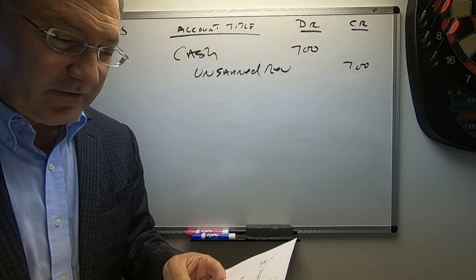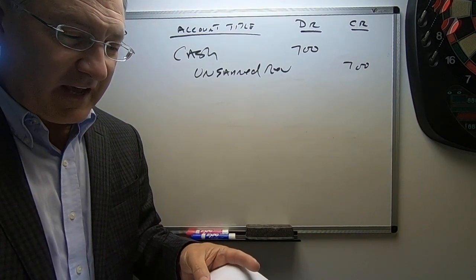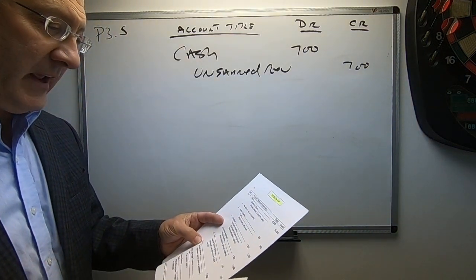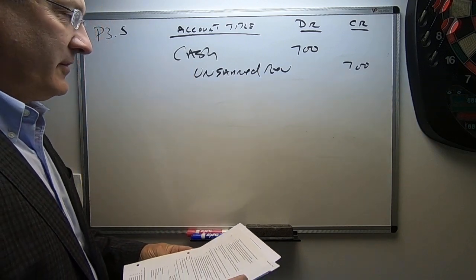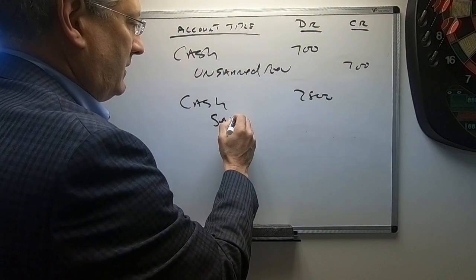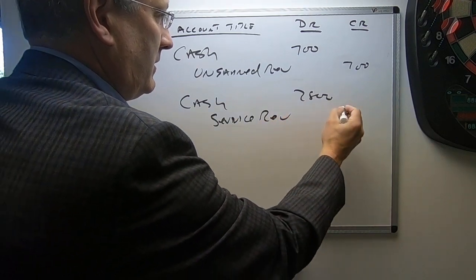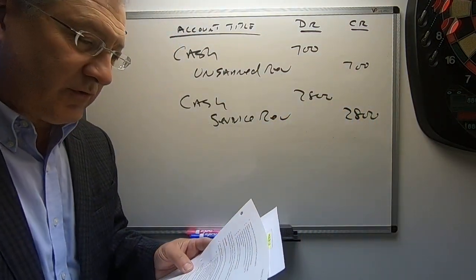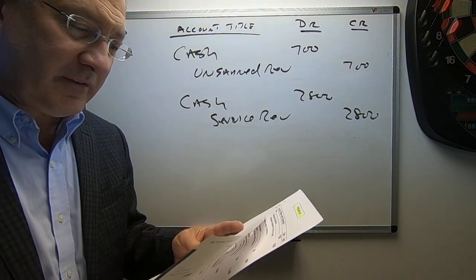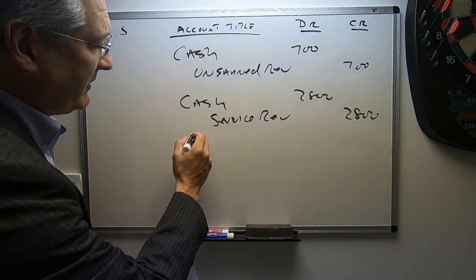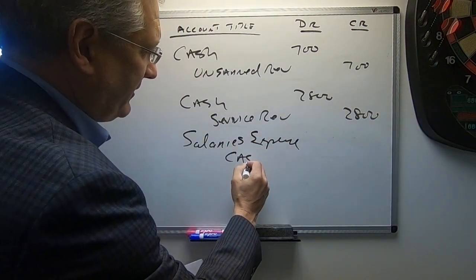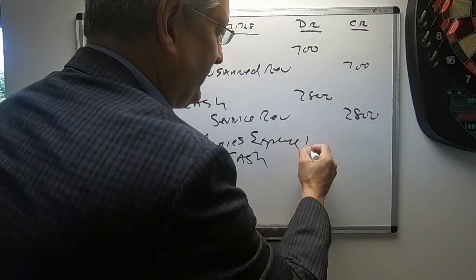The next transaction occurs on the 20th: received $2,800 cash for services completed and delivered. They received $2,800 for services performed, so they're going to debit cash for $2,800 and credit service revenue for $2,800. On the 30th, they paid the secretary-receptionist for the month $1,500. So they have an expense — salaries expense — debited, and a credit to cash for $1,500.